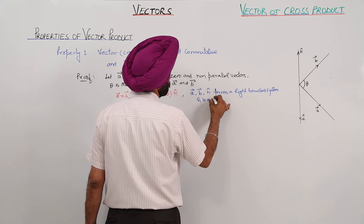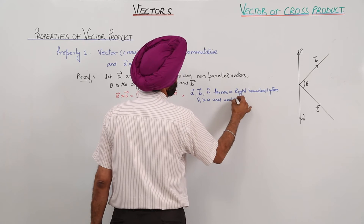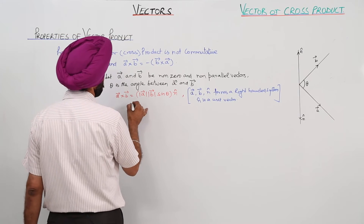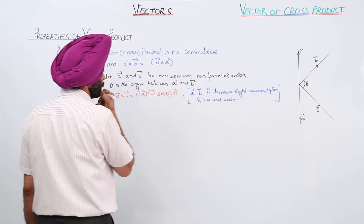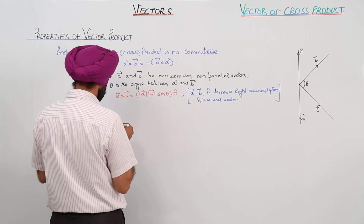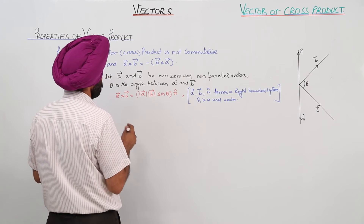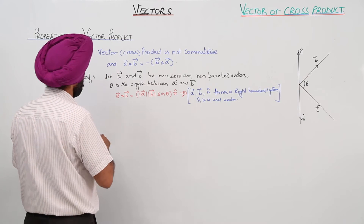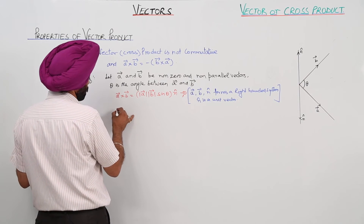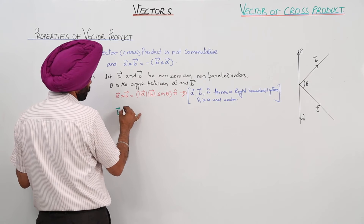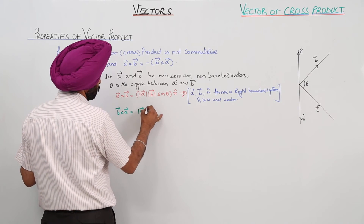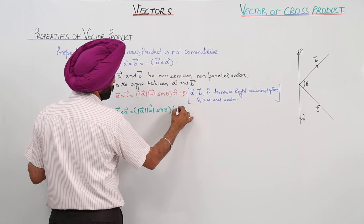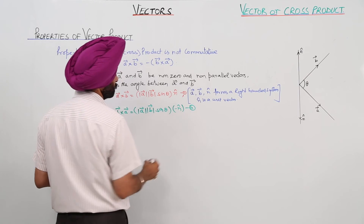Vector n̂ is a unit vector perpendicular to this. Now we can write equation number 1. Vector B × vector A is equal to magnitude of vector A, magnitude of vector B, sin theta, with negative of n̂. This is equation 2.